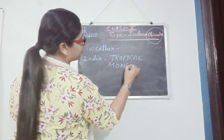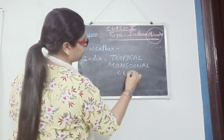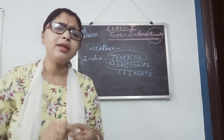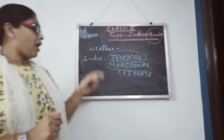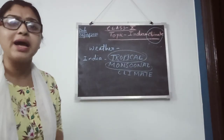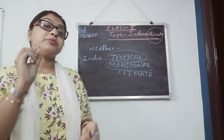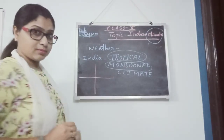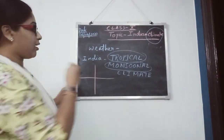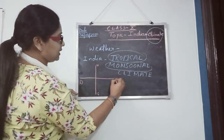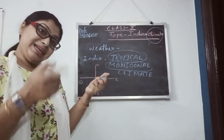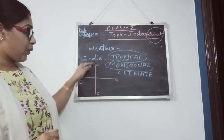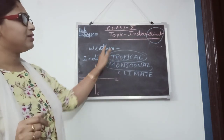Indian climate is tropical monsoonal climate. These two terms — tropical and monsoonal — are very important to understand Indian climate. How did the term tropical come here? We have to know the latitudinal and longitudinal extension of India. You know the four cardinal points: north, south, west, and east. According to these cardinal points we will get the answer why it is called tropical.